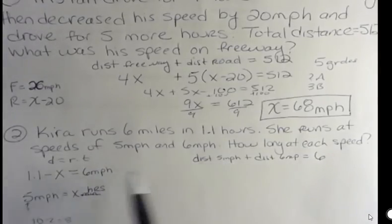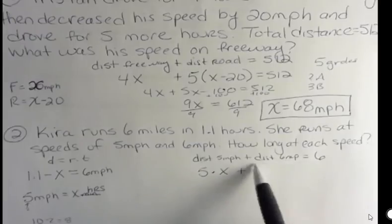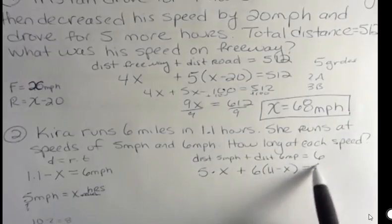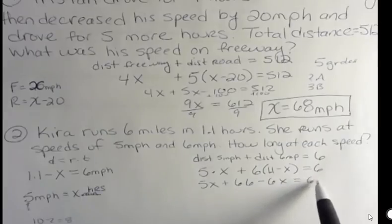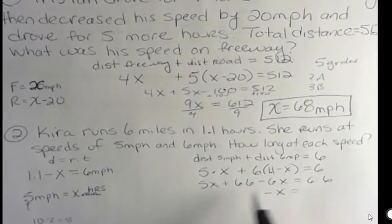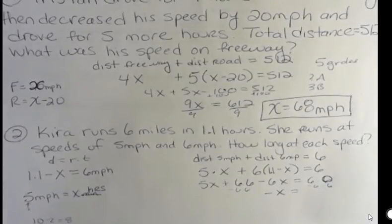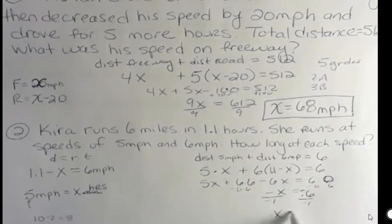Okay, so for rate times time, for this is 5 times X. And for the 6, her rate was 6 and her time was 1.1 minus X. And now I'm going to distribute that and get 6.6 minus 6X. 5X minus 6X is negative X. And if I subtract 6.6 from both sides, this was supposed to be 6.0, sorry. If I subtract 6.6, I get negative, right, which makes sense because I have a negative on the other side. 6 minus 6.6 is negative 0.6. And then if I divide both sides by negative 1, I get X equals 0.6.